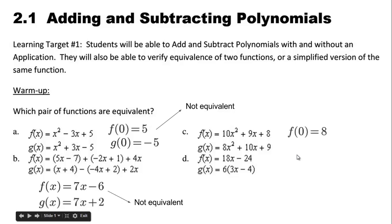The next one, if we sub in f(0), we get 8. The other one, g(0) is 9. So these two are not equivalent either.